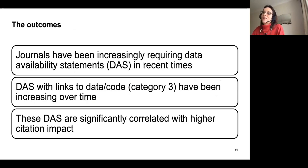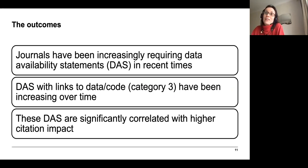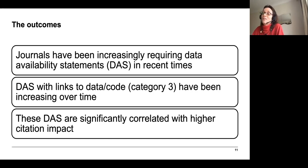We also wanted to quantify the effect of having a data availability statement in terms of predicting citations of a paper. We fitted a linear regression model to predict how many citations an article gets based on different factors including number of authors, references, and field of research — but crucially we included the presence of the data availability statement and its type. We found that the presence of a data availability statement leads to up to 25% more citations.